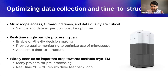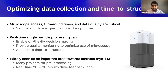CryoEM samples do not always behave as expected, and optimizing a sample for collection can be a challenging task. There are many more samples being prepared today than time available on microscopes. Many people in the field have pointed to real-time processing as a way to optimize data collection and sample selection to achieve better results by enabling decision making on the fly — for example, selecting between different grids and squares, optimizing microscope optics, or data collection parameters. Real-time processing is also seen as a way to optimize the use of microscope time so that poor samples can get dropped early and good samples have lots of data collected. And third, real-time processing can massively accelerate the time it takes to get to a high-resolution refined structure, which is increasingly important in drug discovery contexts.